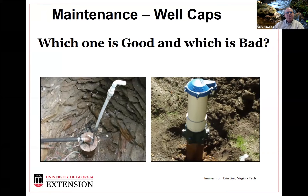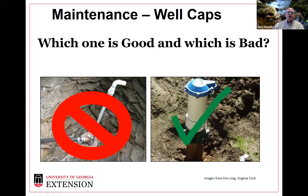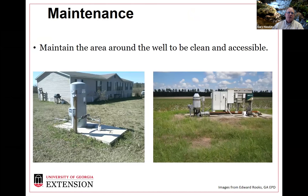When looking at well caps, there's always the good and the bad. The well cap and the well casing itself should stand above the ground surface. The well on the left here is actually below ground surface, with a pipe coming up as a way to access the tap. The one on the right has a good well seal and is above ground level. For maintenance, we definitely want something like the one on the right, not the one on the left, to keep surface water out of the well.